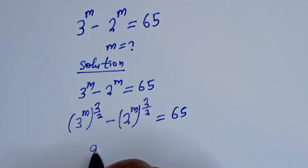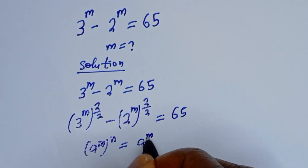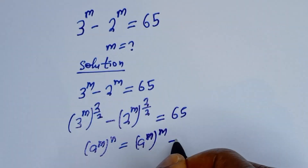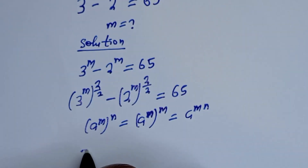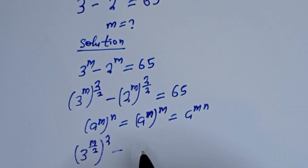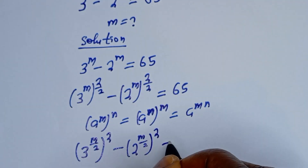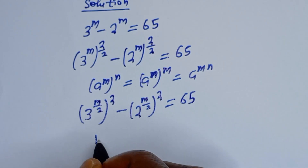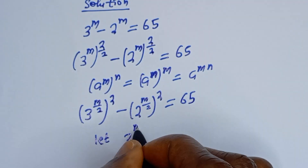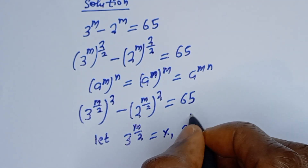Take note that if you have a raised to the power of m to the power of n, this is equal to a raised to the power of n to the power of m, which equals a raised to the power of mn. Then this can be written as 3 to the power of m over 2 squared minus 2 to the power of m over 2 squared, is equal to 65.